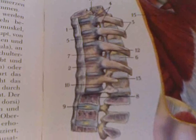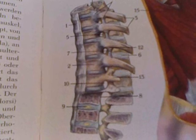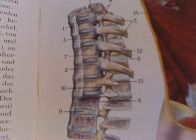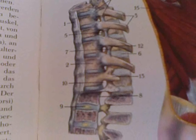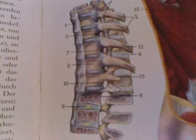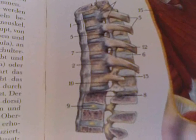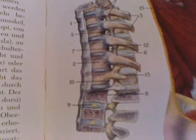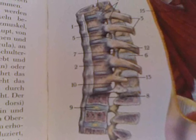Number three are the ribs. Number four is the rib vertebral joint. Number five is the elastic ligament. Number six is the interspinal ligament. Number seven is the transverse costal ligament. Number eight is the longitudinal ligament.